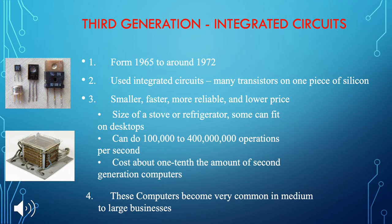Now I want to talk about the third generation: Integrated Circuits, or IC. When you open a device, you can see millions of ICs in that device. That is a huge revolution in computer systems. It was built from 1965 to around 1972, using integrated circuits with many transistors on one piece of silicon. Smaller, faster, more reliable, and lower in price.